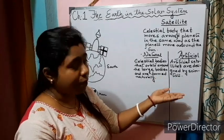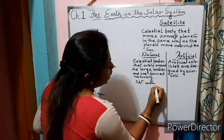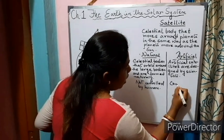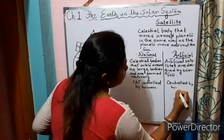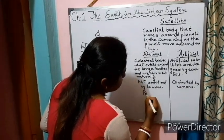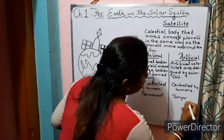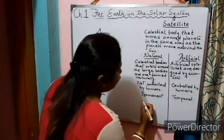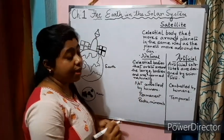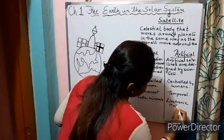Natural satellites are formed naturally while artificial satellites are formed by human beings, by scientists. Natural satellites are not controlled by humans, but artificial satellites are controlled by humans. Natural satellites are permanent, whereas artificial satellites are temporary, or we can say temporal. Natural satellites are mainly formed of rocks and minerals, but artificial satellites are made up of electronic materials and metals.